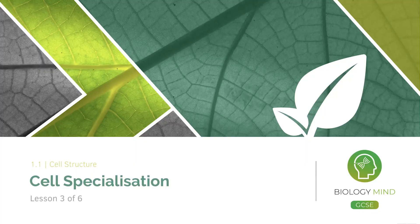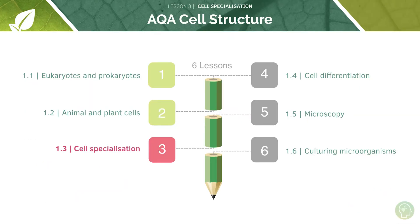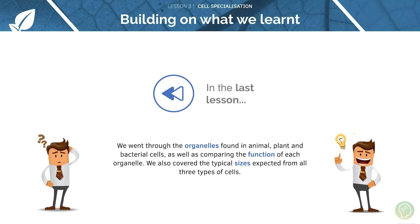Welcome to tutorial three of six on cell structure. Today we'll be looking at cell specialisation. In the last tutorial we went through the organelles found in animal, plant and bacterial cells and compared the functions of each of these organelles, so do feel free to go back and recap on that — we're going to build further upon what we learnt in this session.